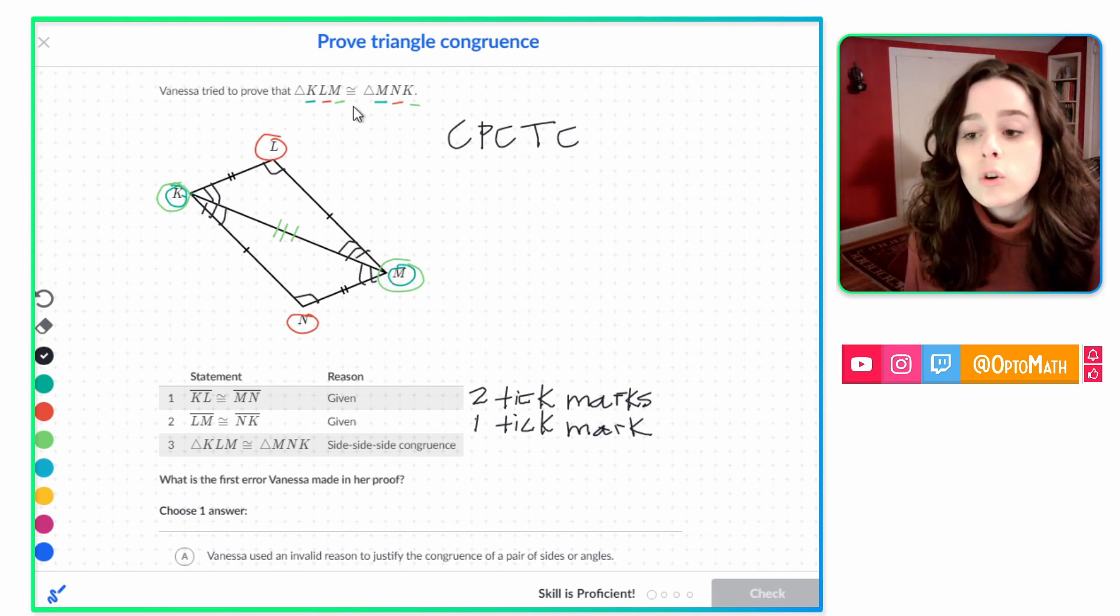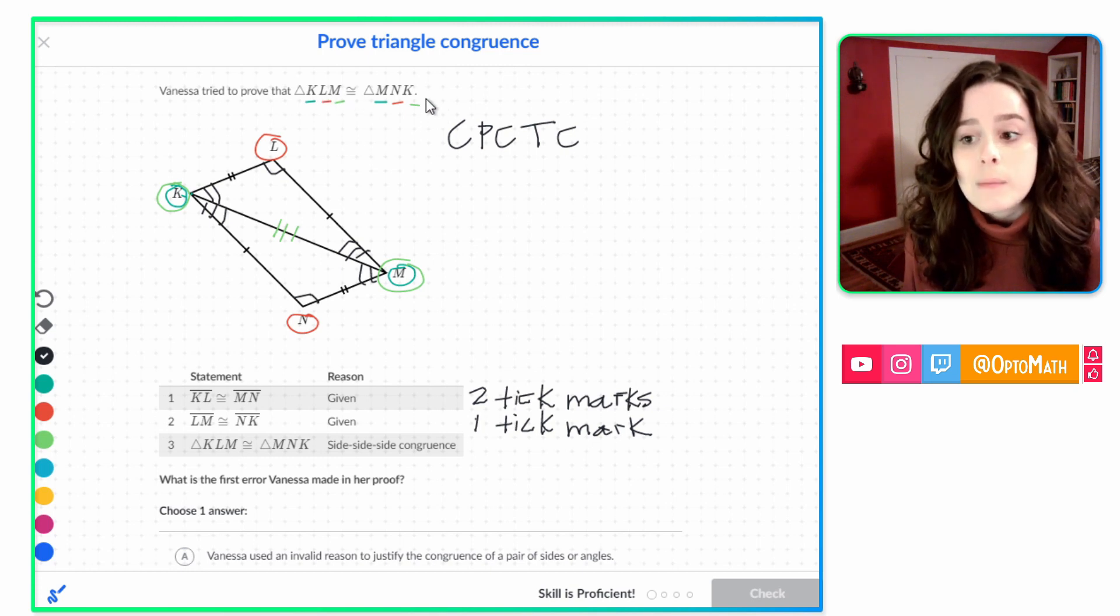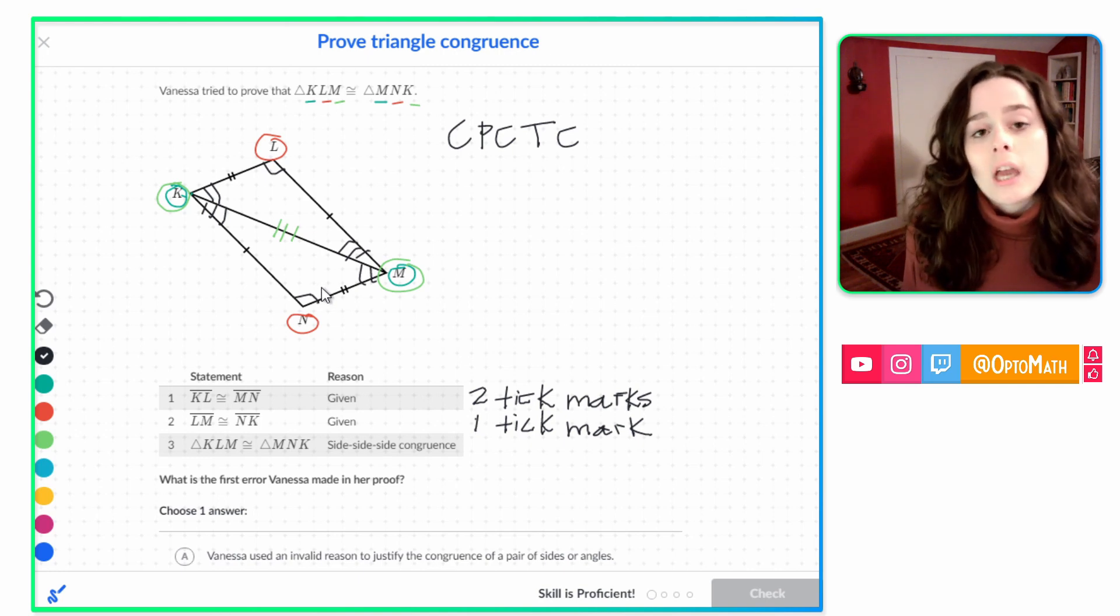Again, I just picked an angle, looked at the order it was in the congruent statement, and had to map it that way. So let's say we wanted to look at KLM. That's going to be actually the order it already is. So that has to map to MNK. MNK, which also has one arc mark. So if you see, that's a way to check that you do have congruence. Let's go ahead and finish this problem.